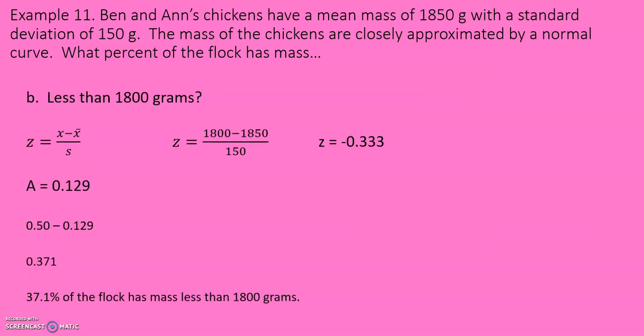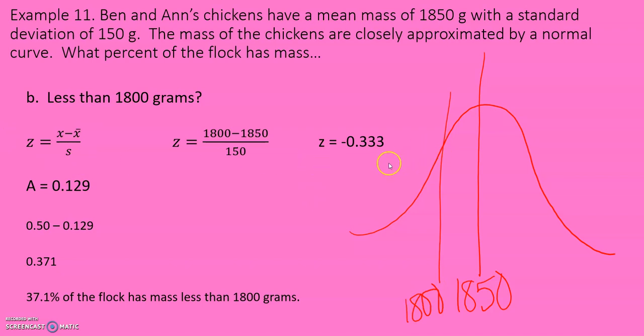Less than 1,800 grams. Again, draw the picture. 1,850 is our mean. 1,800 is down here. Finding the Z-score for 1,800, it's negative 0.333, which gives us the A-value of 0.129. Less than 1,800, though, means we want this area down here, and this whole area here is 0.5. So we're going to do 0.5 minus that 0.129 to give us 0.371. So 37.1% of the flock has mass less than 1,800 grams.